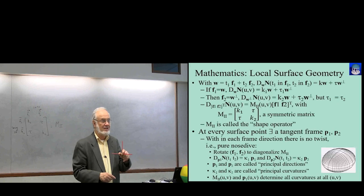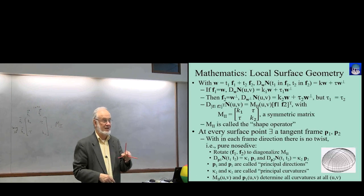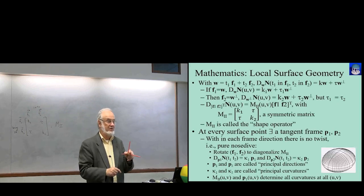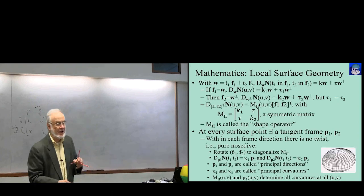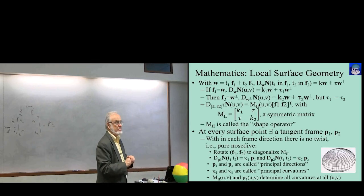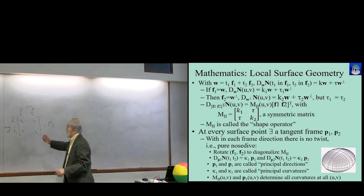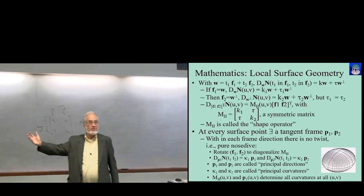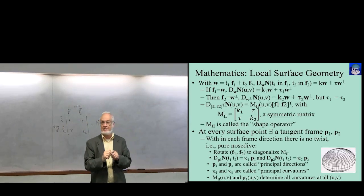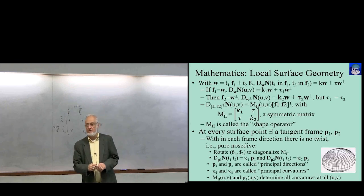The matrix tells you the components of the normal swing into this vector and into this vector when you walk in a given direction. So I had not noted that what you're doing when you get the principal directions is just computable by eigen analysis on this matrix. Pick any walking direction, figure out what this matrix is, diagonalize it, and you'll get the eigenvectors and eigenvalues that are always the principal directions and the principal curvatures.